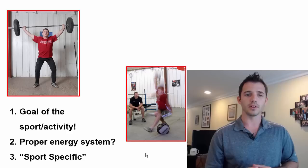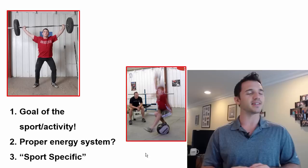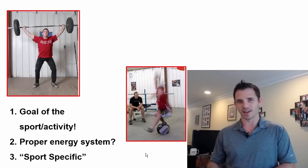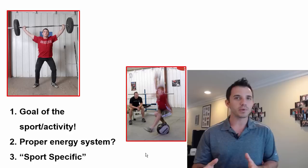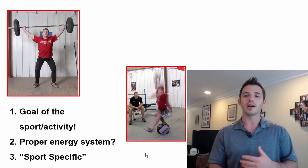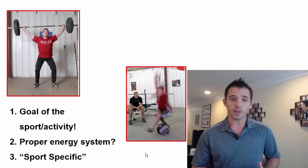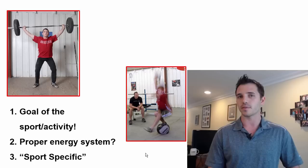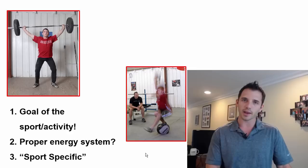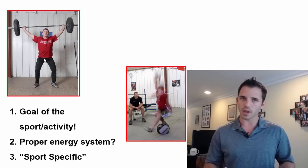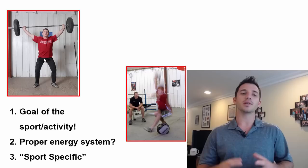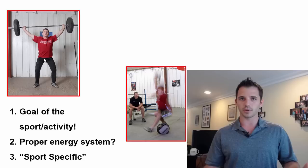Number three: sport specificity. This term is horribly misunderstood — it does not mean the exercise has to look like your sport. It simply means: will the skill reasonably transfer over to the sport, activity, or competition? A common misunderstanding involves running. Running is almost always one foot at a time, so people say all your training should be done on one leg and you should never train bilaterally. That's pretty short-sighted and a fundamental misunderstanding of exercise physiology and strength and conditioning. Nonetheless, your exercises do need to have some specificity towards your sport.